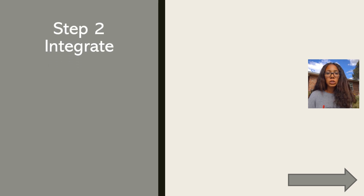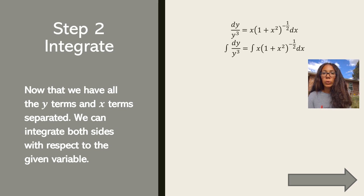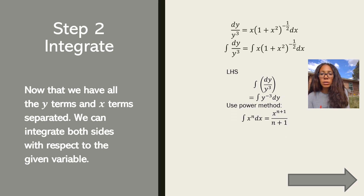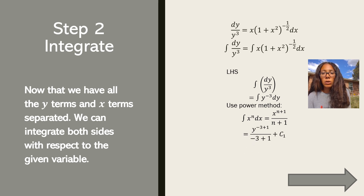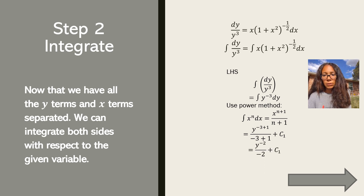Now we move to step 2, which is to integrate. We integrate both sides with respect to the given variable. Starting with the left-hand side, we have the integral of dy over y cubed. Since 1 over y cubed equals y to the negative 3, we use the power rule: the integral of x to the n dx equals x to the n+1 over n+1. We get y to the negative 2 over negative 2 plus c1.